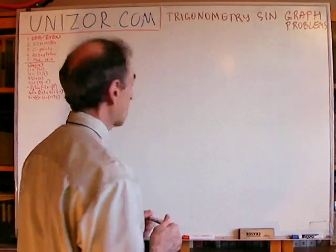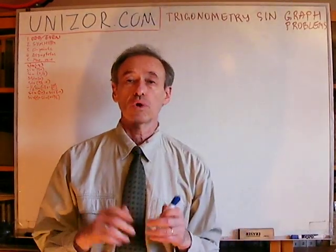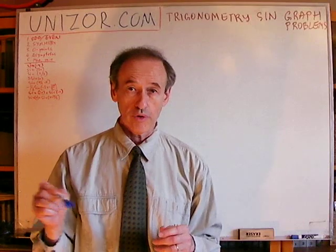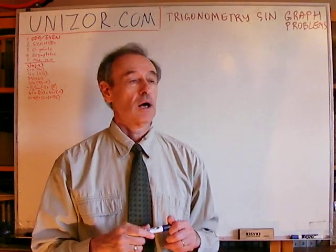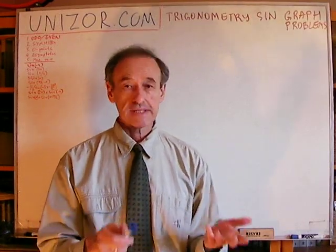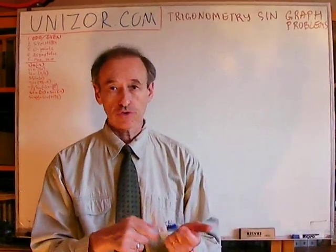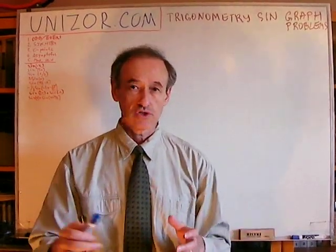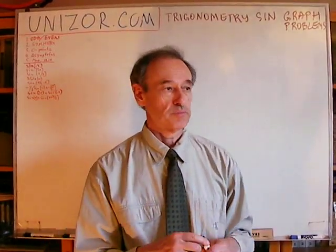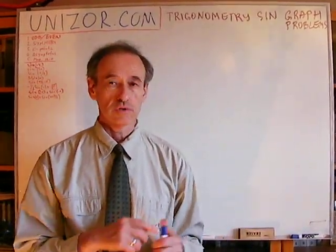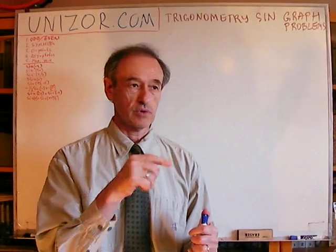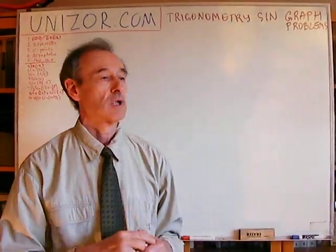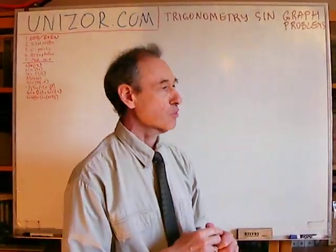Next, it's important to know when the function equals zero. For sine, for instance, it's 0, π, 2π, etc. For cosine, everything is shifted by π/2. So it's π/2, π/2 plus π, π/2 plus 2π, etc.